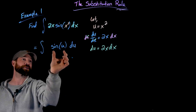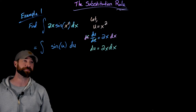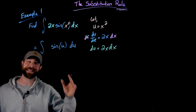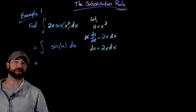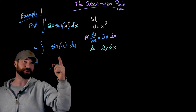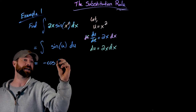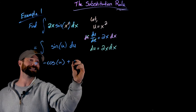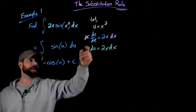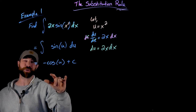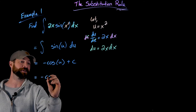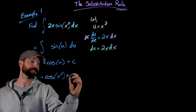This gives me the indefinite integral of sine of u du. At this point it's really straightforward — this is the beauty of the substitution rule. The anti-derivative of sine of u is negative cosine of u plus c. And then, as always, I go back and substitute in terms of x. So the final answer is negative cosine of x squared plus c.